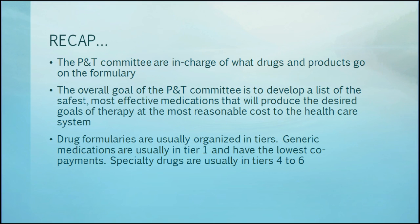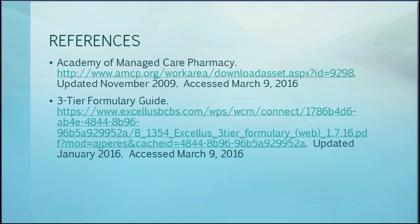To summarize, the P&T committee is in charge of what drugs and products go on the formulary, and their overall goal is to develop a list of the safest, most effective medications that will produce the desired goals of therapy at the most reasonable cost to the healthcare system. Drug formularies are usually organized in tiers. Generic medications, which are usually dispensed the most, are usually in Tier 1 and have the lowest co-payments. Specialty drugs are usually in Tiers 4 to 6.